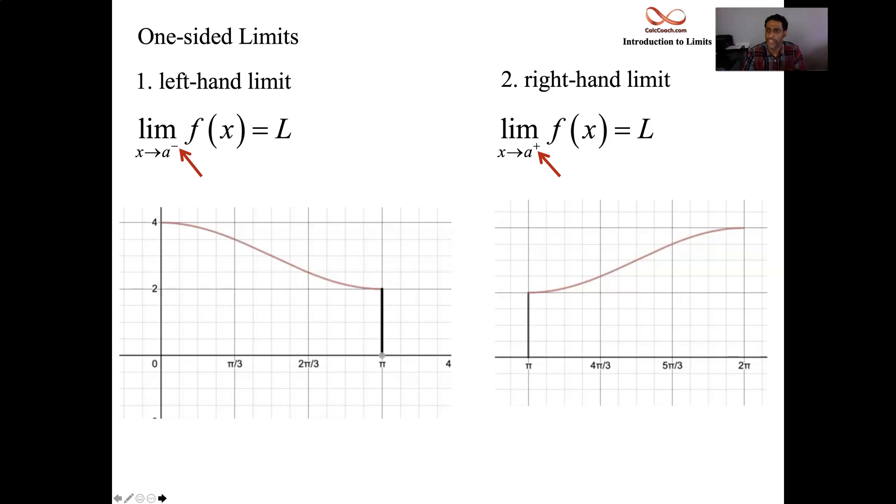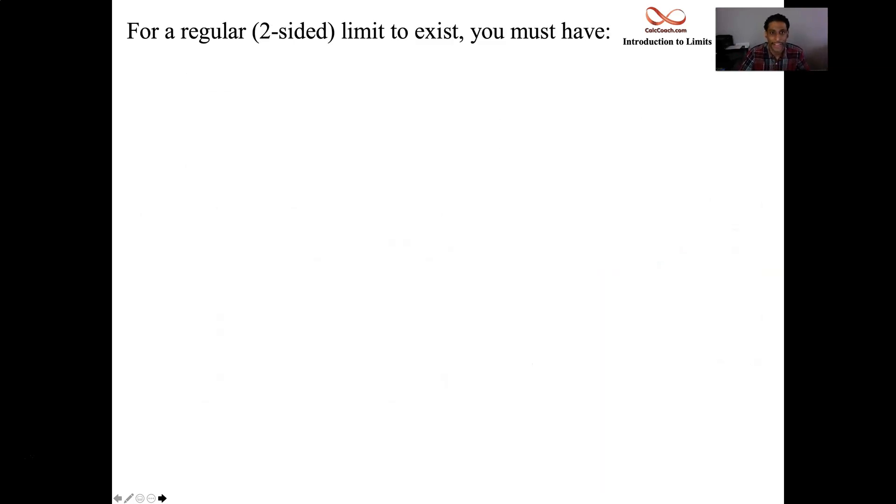And so, when someone gives you a limit without any indication of which direction, you consider that a two-sided limit. But if there's this notation, minus or plus, it's only a one-sided limit, and you can ignore the other side.